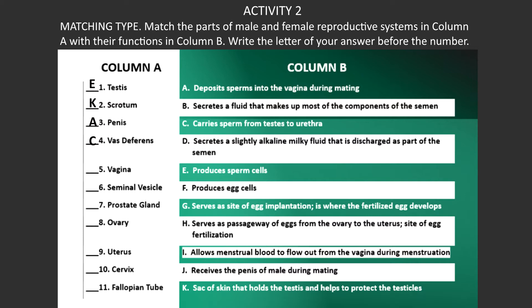The vagina receives the penis during mating, letter J. The seminal vesicles secretes a fluid that makes up most of the components of the semen, letter B. For number seven, the prostate gland secretes a slightly alkaline milky fluid that is discharged as part of the semen, letter D. The ovary produces egg cells, letter F. The uterus serves as a site of egg implantation — it is where the fertilized egg develops up to nine months, letter G.